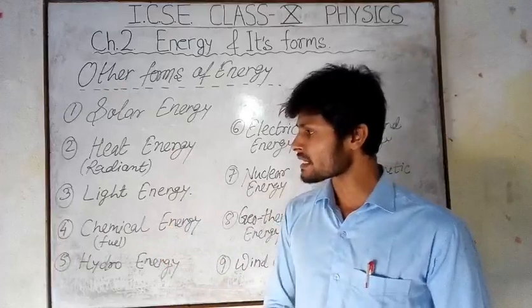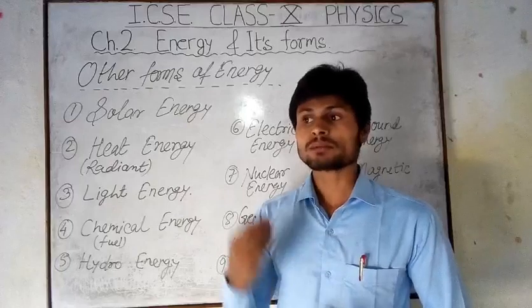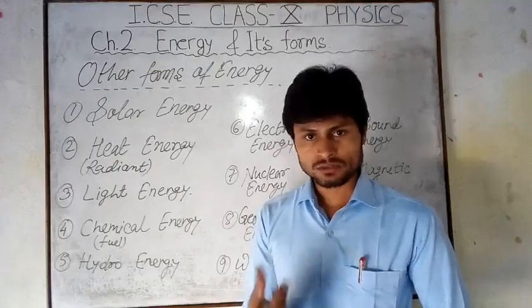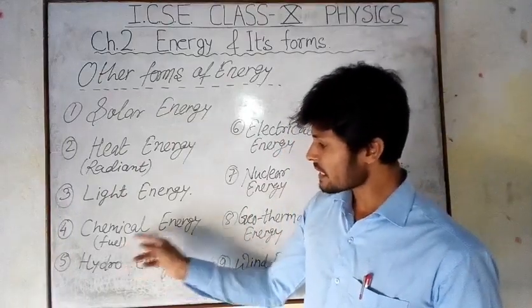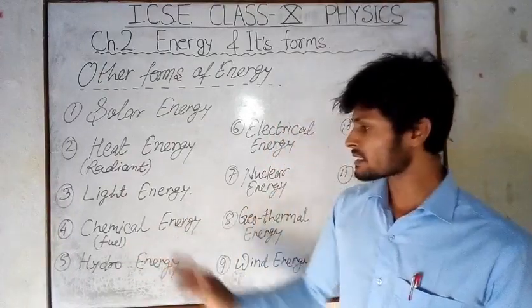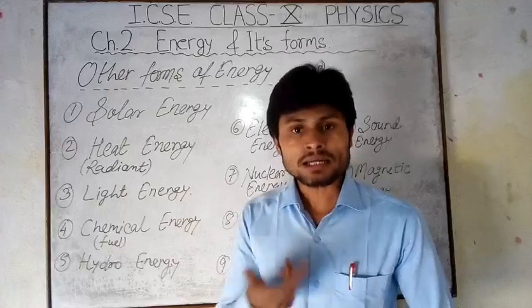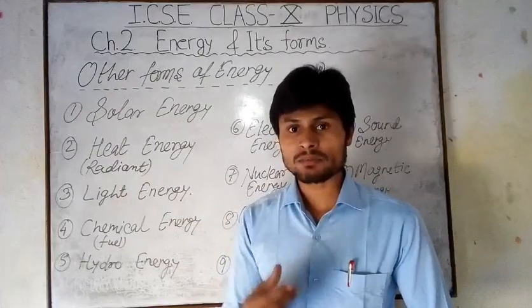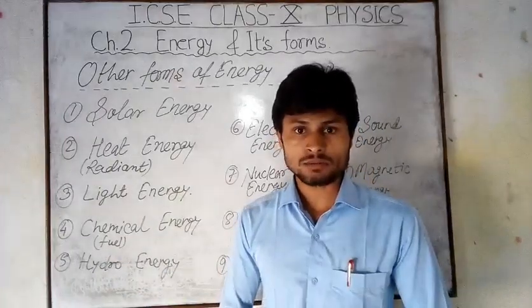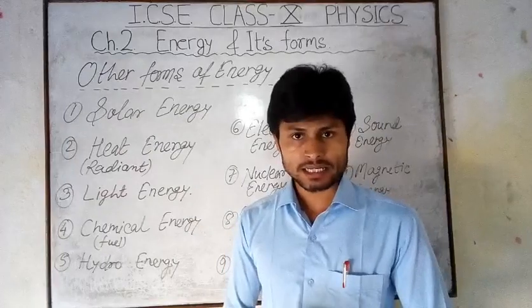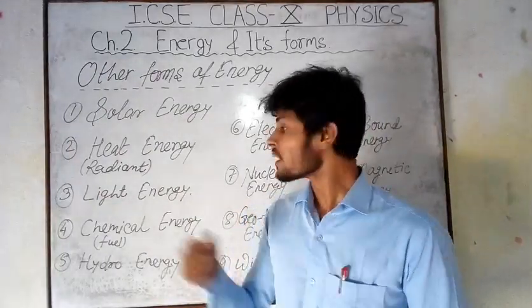Light energy is the energy caused by light. Natural sources include the sun; artificial sources include bulbs and candles, which give light energy as well as heat energy. Chemical energy is the energy stored in chemicals. The candle burns because it is made of a chemical that has chemical energy. Petrol burns because petrol has chemical energy — when it is burnt it releases heat energy and light energy.